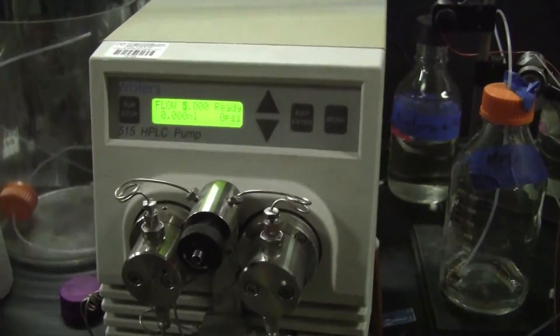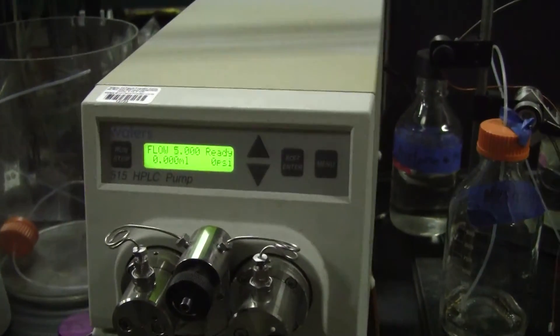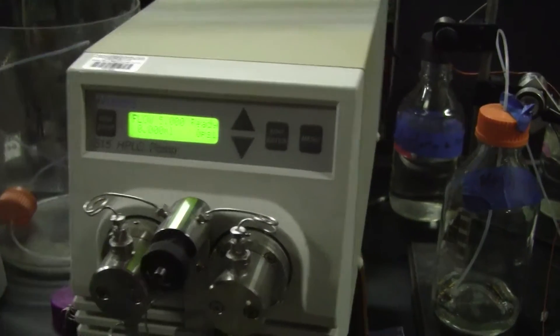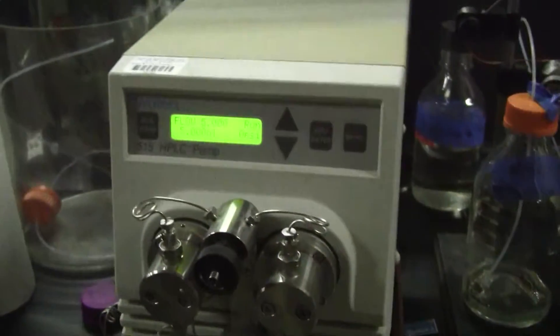We're just doing a little flow test. We have the flow set at 5 milliliters per minute. We're going to hit run. We're going to let that build up pressure because we're using a little bit of a column.